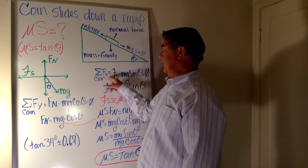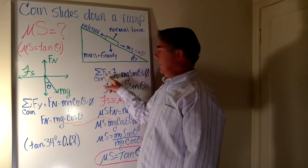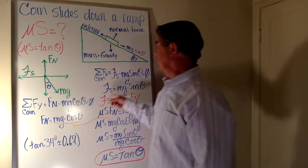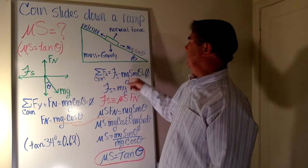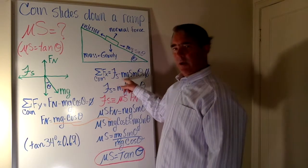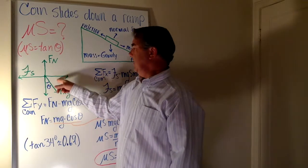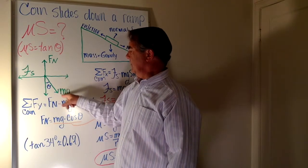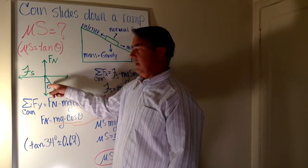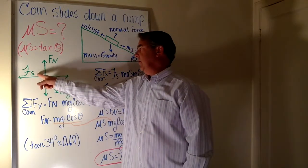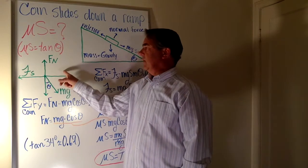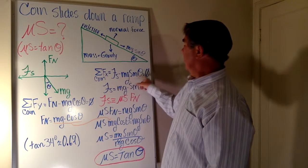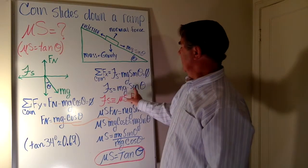The forces on the x-axis are the force of static friction opposing movement of the coin down the ramp, and the positive x component of mg, which is mass times gravity times the sine of theta. The force of static friction equals mg sine theta. They sum to zero — they are equal and opposite.